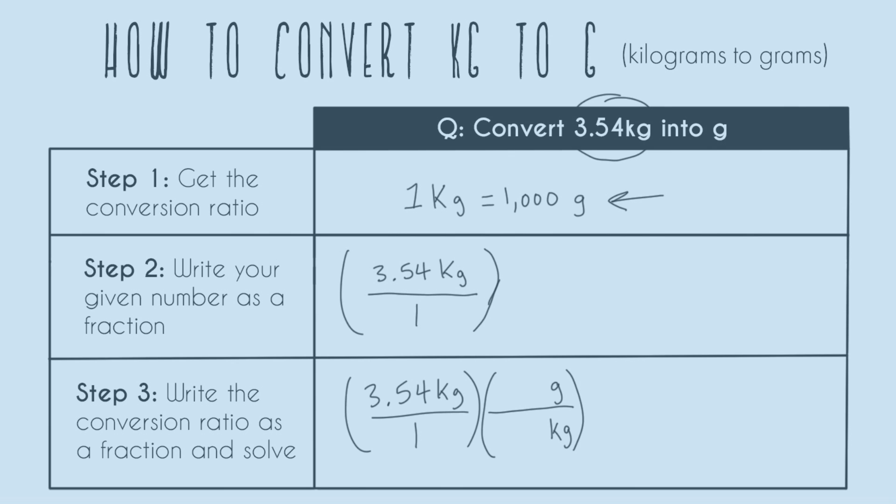So now that we have our two units we just fill in our numbers. Up here in step 1, kilogram had just 1, so 1 goes still next to kilogram, and then grams had a thousand so a thousand is still going to go next to grams.